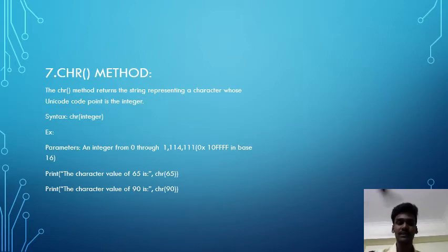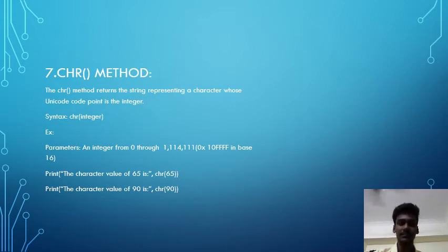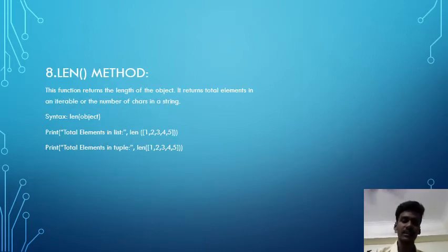The seventh one is chr() method, which stands for character. The chr() method returns the string representing a character whose Unicode code point is the given integer. The syntax is chr(integer), and the example is given below.